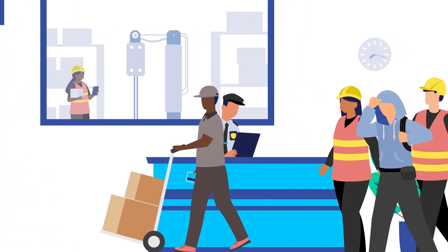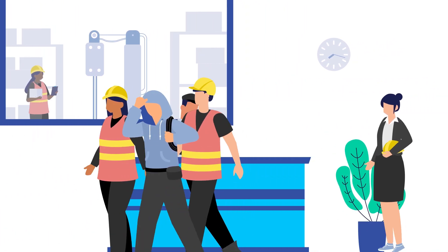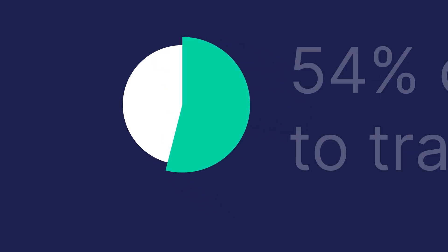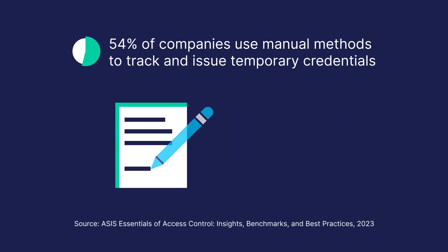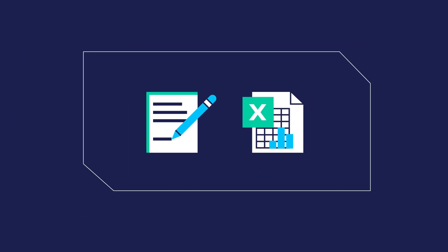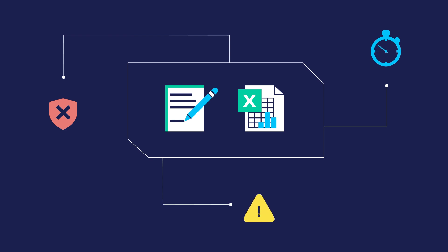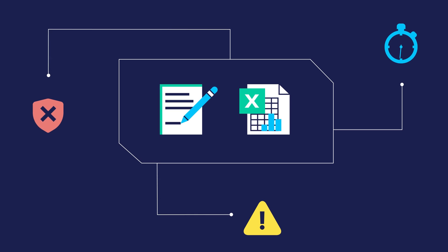You have complete visibility and control over physical access until a visitor arrives. More than 50% of companies still use manual methods such as pen and paper or spreadsheets to track and issue temporary credentials. Not only does this pose a security risk, but issuing access is time-sensitive and when done manually is error-prone and cumbersome. This also exposes your business to compliance risks.